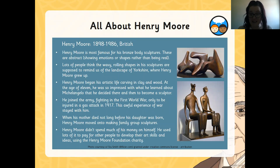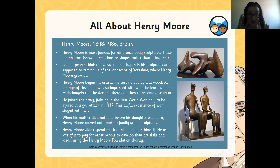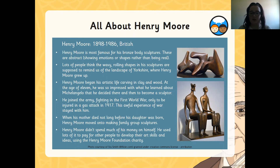Henry Moore was born in 1898 and he passed away in 1986. He was British. Henry Moore is most famous for his bronze body sculptures. These are abstract, meaning you have to look at them from a different perspective — they don't necessarily show straight away what they are, but once you have a look you can identify certain things, showing emotions or shapes rather than being real. Lots of people think the wavy, rolling shapes in his sculptures are supposed to remind us of the landscape of Yorkshire, where Henry Moore grew up.